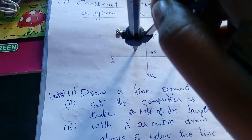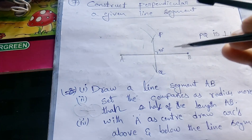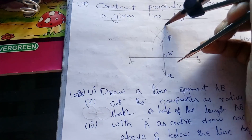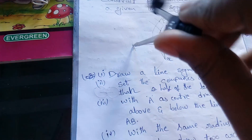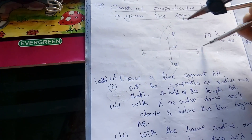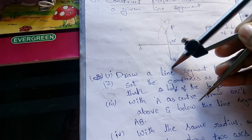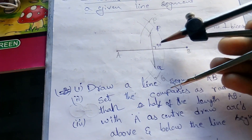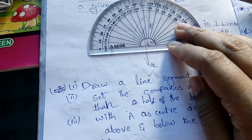With A as center, draw an arc above and below, then with B as center draw one more arc with the same radius. The arcs will meet at two points. Locate the upper intersection as P and the lower intersection as Q. If you join P and Q, this is the perpendicular bisector. You can check with a protractor — it will be exactly 90 degrees.